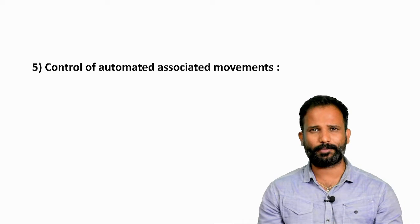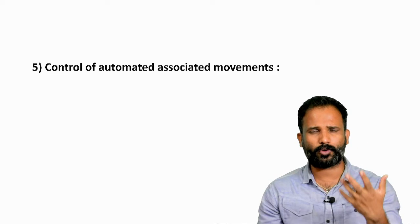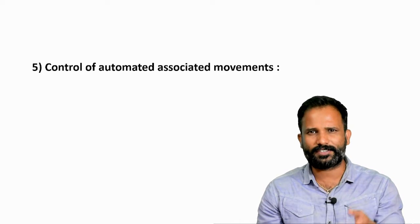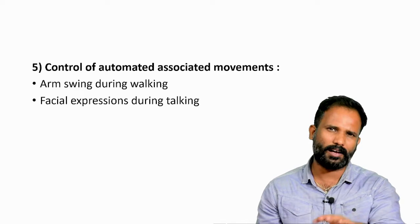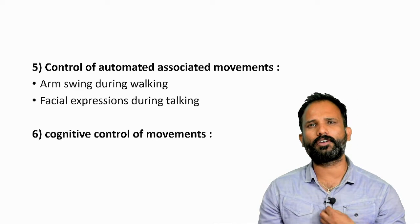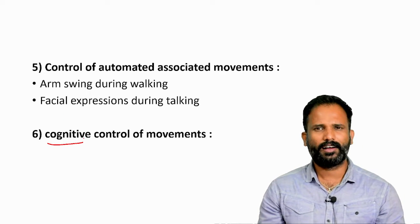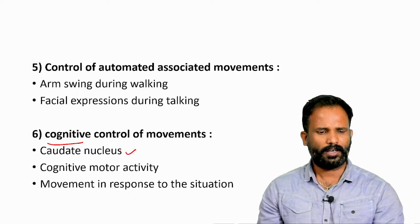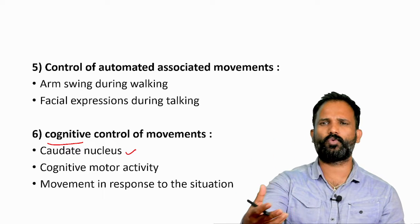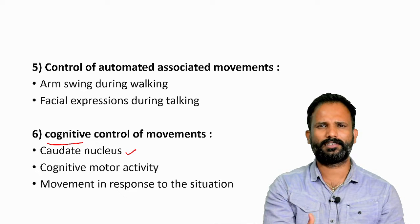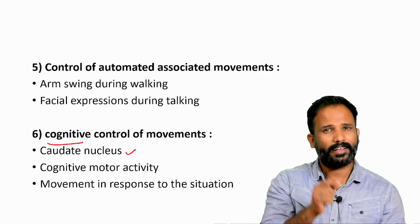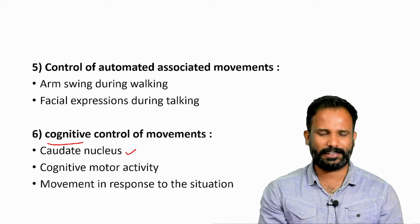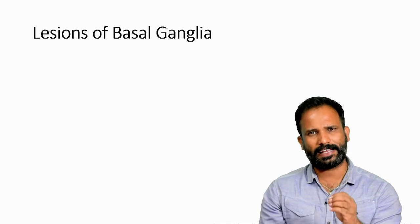Basal ganglia controls automated associated movements — such as moving your hands while talking, facial expressions when speaking, and arm swings when walking. These automatic associated movements are under basal ganglia control. There is also cognitive control of movement, mainly done by the caudate nucleus. For example, if you are walking and suddenly see a snake, you run away — that motor activity response to the situation is cognitive motor control by the basal ganglia.